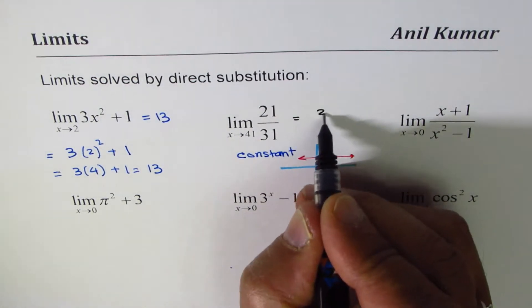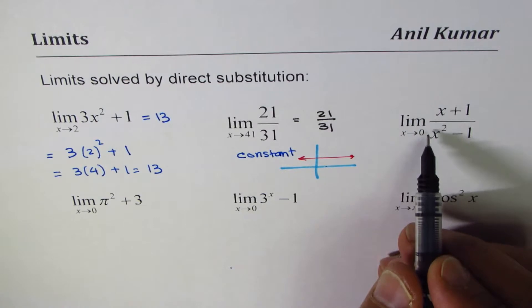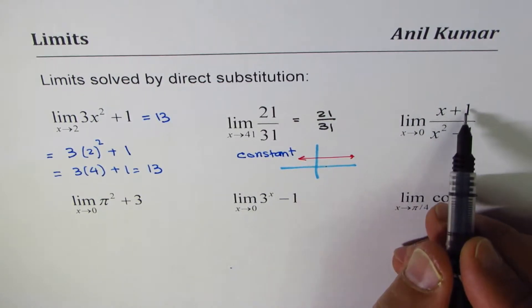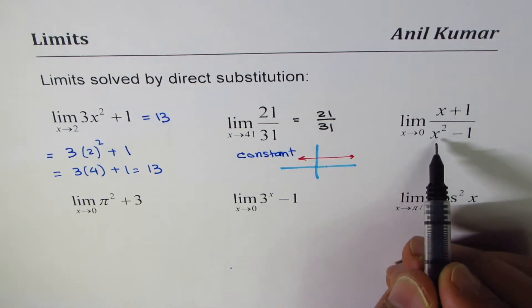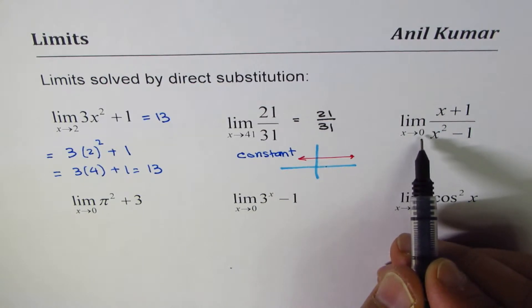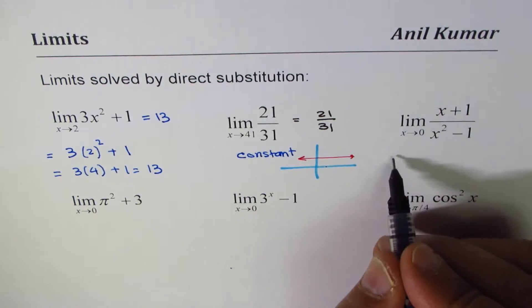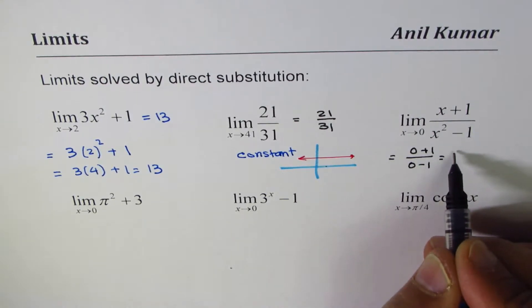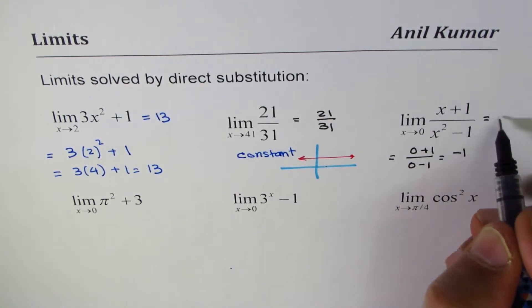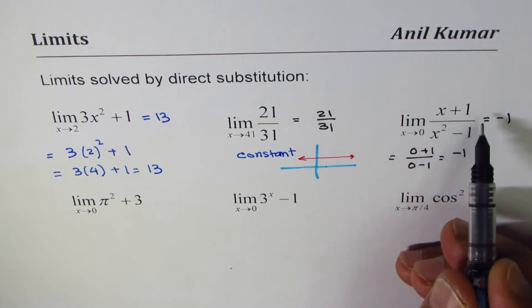Then we have limit when x approaches 0 for (x+1)/(x²-1). Now this function is discontinuous at x equals ±1. At 0 it is continuous, so we can just substitute 0 here. If I substitute 0 I get (0+1)/(0-1) and that is -1. So the limit of this function will be -1. Now as an exercise you can find the limit of this function at x equals to 1.